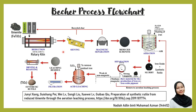Greetings, I'm Nadia Adlin and I'll be explaining the Becher process flowchart. We start with ilmenite, FetiO3, and the desired product is synthetic rutile, TiO2. In the first step, ilmenite, coal, and char react at 1,150 degrees Celsius in a rotary kiln. The iron oxide is reduced to metallic iron to get reduced ilmenite, which must be separated from its gangue material through sieving and magnetic separation.